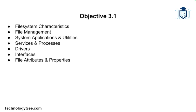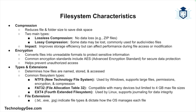The file system is a crucial part of an operating system as it determines how data is stored and organized on storage devices. Let's explore some key characteristics of file systems. First, let's talk about compression — this reduces the size of files and folders to save disk space, and there are two main types.